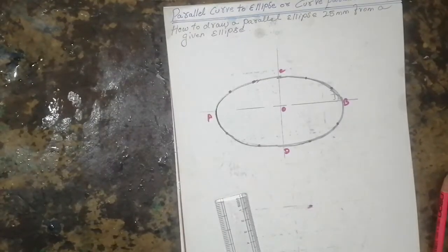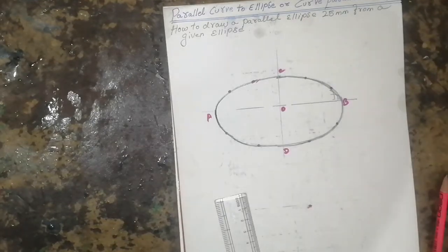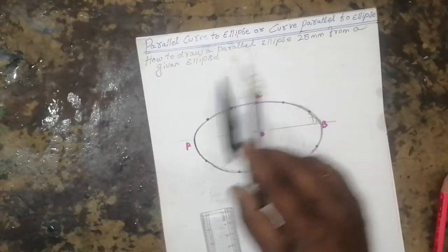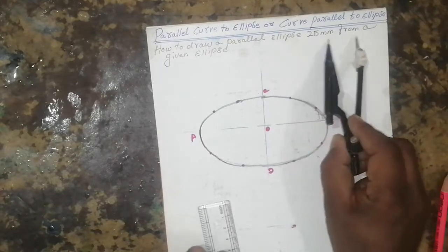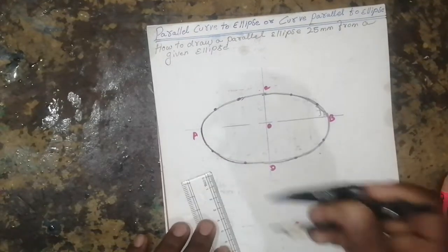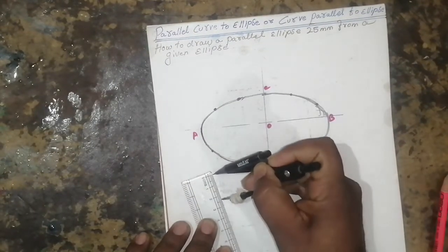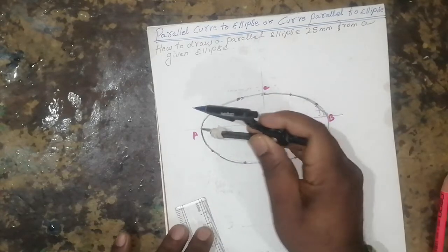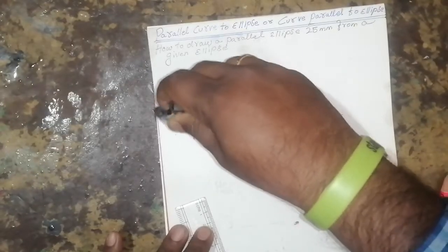Then you should take the question that you are to draw a parallel ellipse 25mm from a given ellipse. Take 25mm from your scale. See, keep it in A and cut one arc.